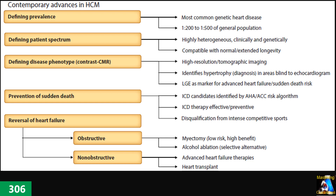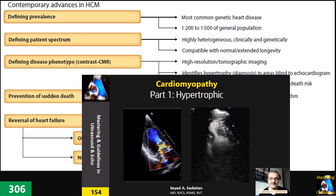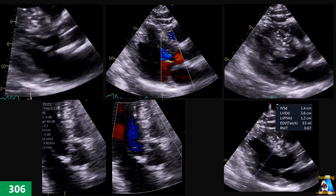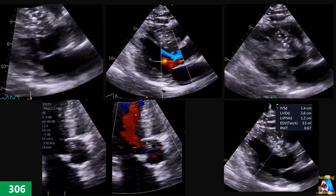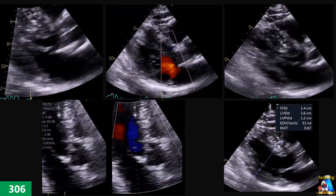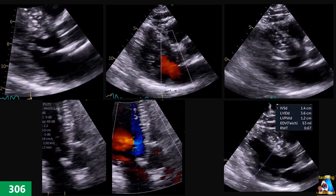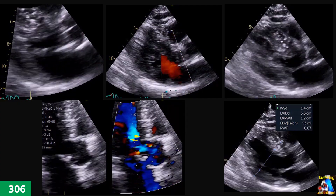Obstructive means most of the time it is LVOT obstruction. I am assuming that you have baseline knowledge about hypertrophic cardiomyopathy. If you haven't checked yet, go to the cardiomyopathy playlist and check the related clips on apical hypertrophy, SAM, and other topics. Then come back and check this one. Now let's see how we approach this case and how we do Valsalva.